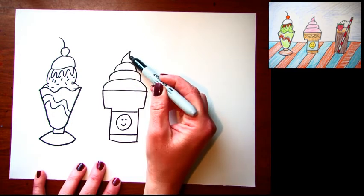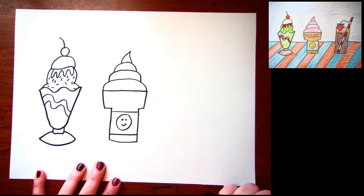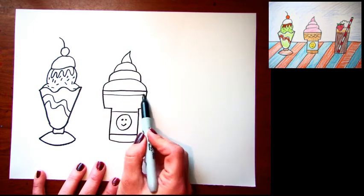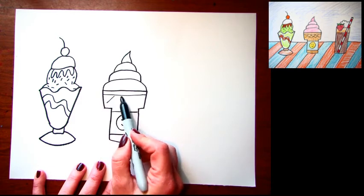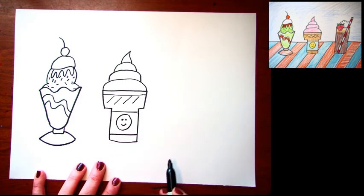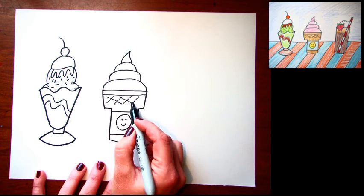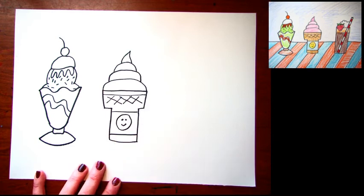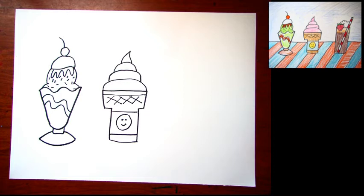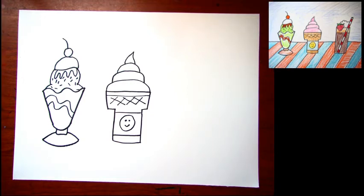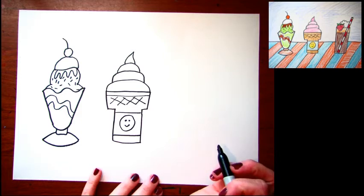And then I'll make a nice little pointy one. I'm just gonna add some more lines here in my cone to make it look like the waffle of the cone. I just crisscross the lines. Now we're done with our second ice cream cone, we're gonna move on to the third.